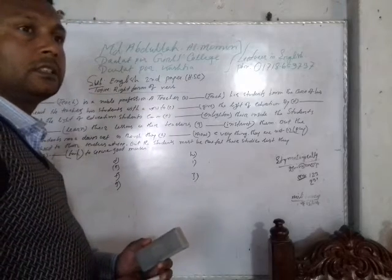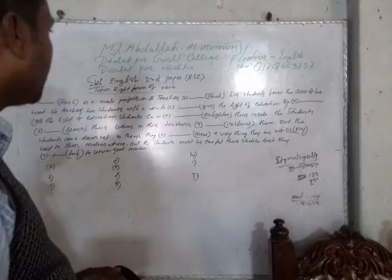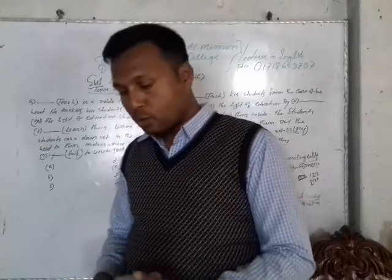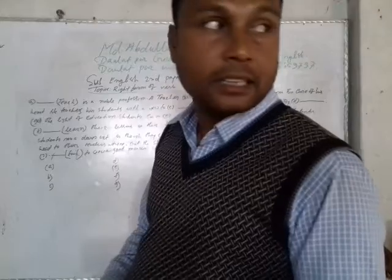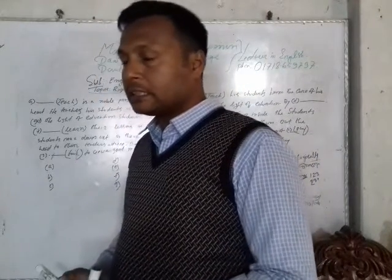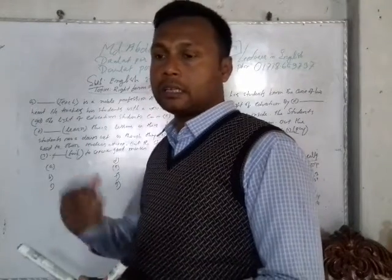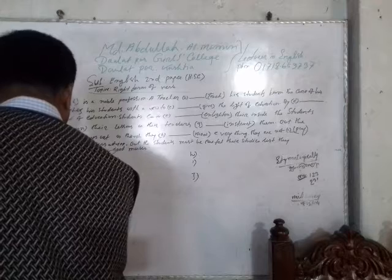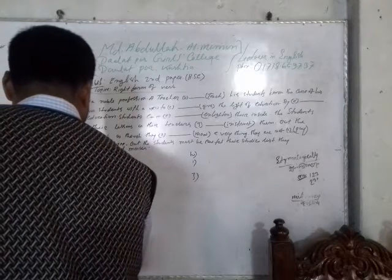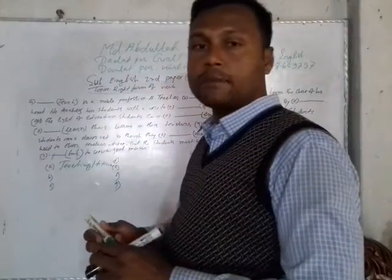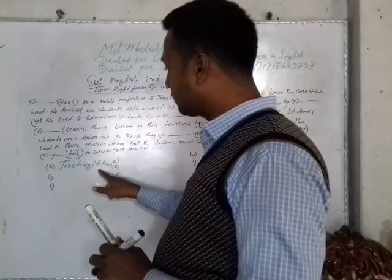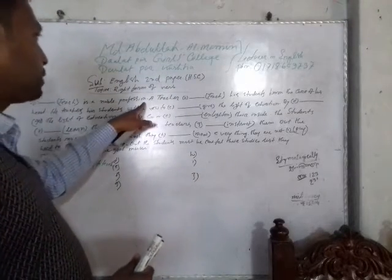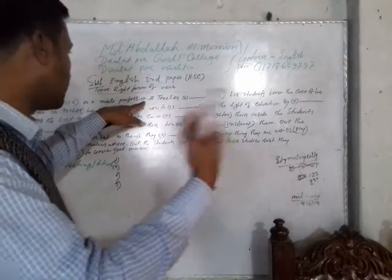According to the rules of the sentence, if we get a blank as a subject, we use an infinitive or gerund. So according to this rule, we can use the correct form 'teaching' or 'to teach.' To teach is a noble virtue, or teaching is a noble virtue. The correct answer is 'teaching' or 'to teach.'